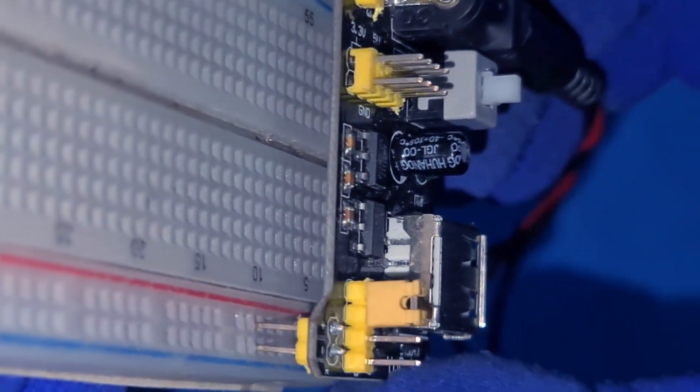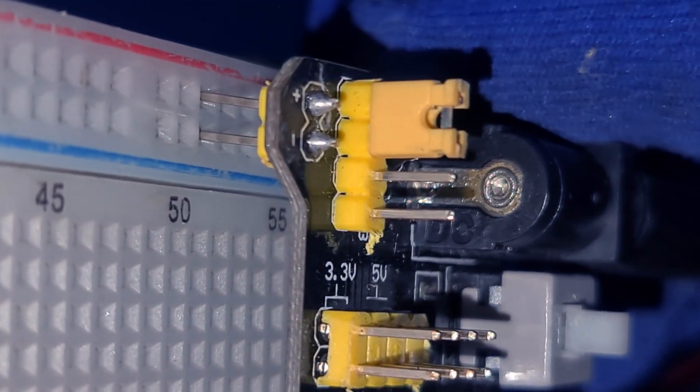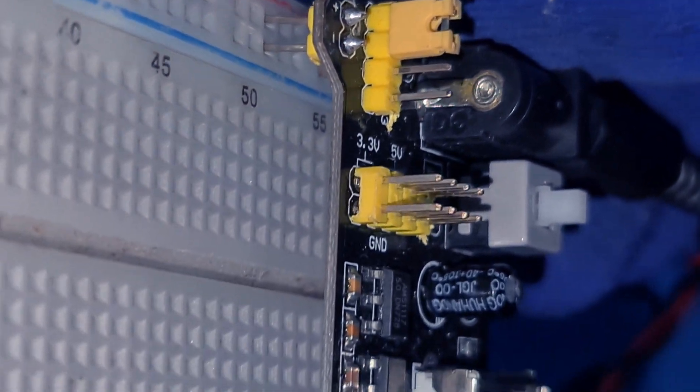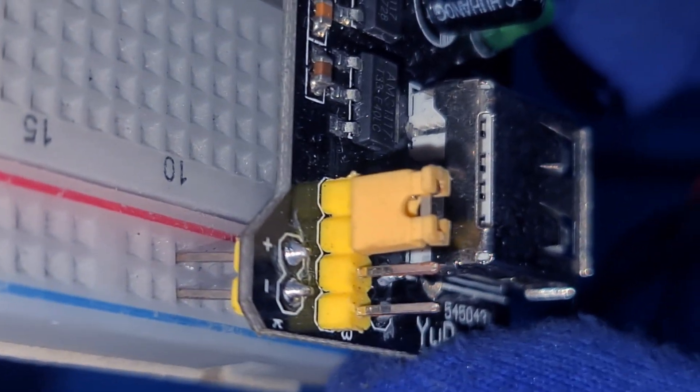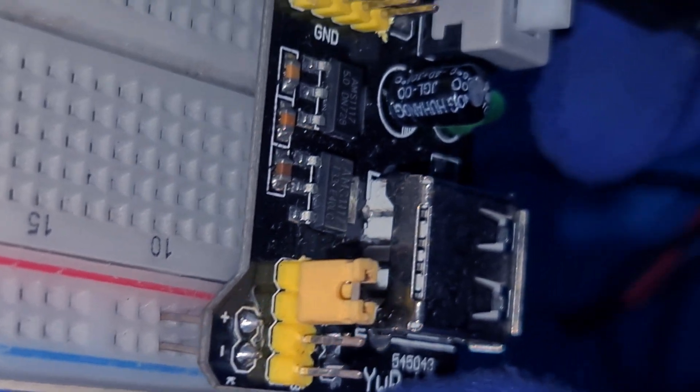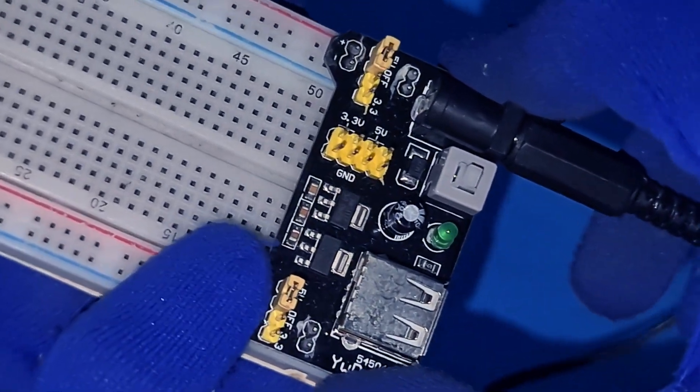I've connected this to my breadboard. Now I can power my microcontroller and sensors directly, switching between 3.3 volts and 5 volts as needed. It's so convenient. See how easily I can change the voltage for each channel independently? This flexibility is a game-changer for prototyping.